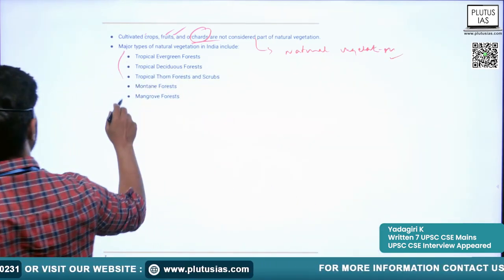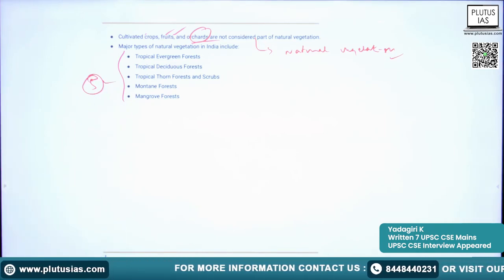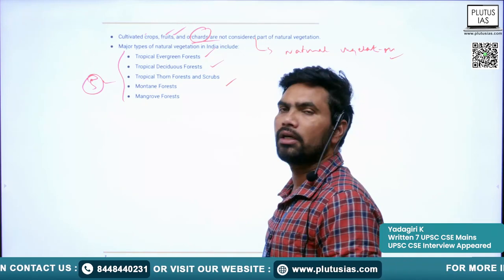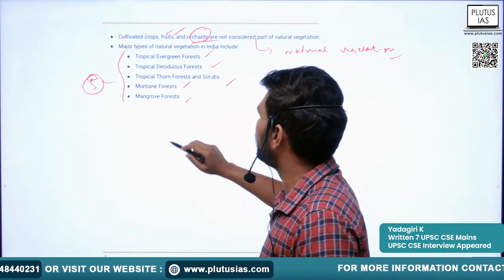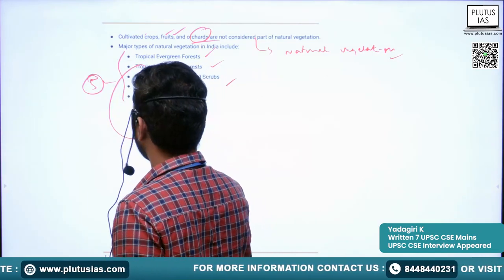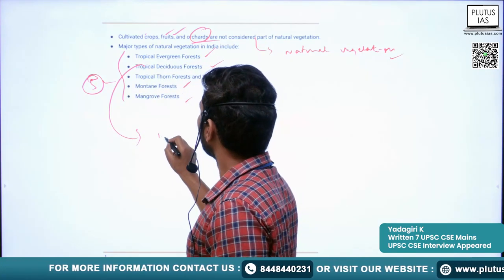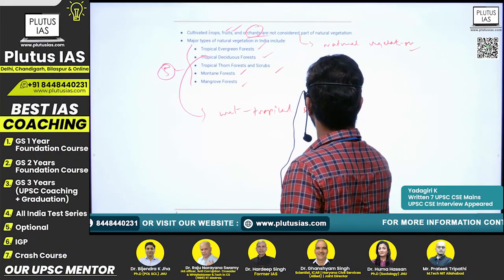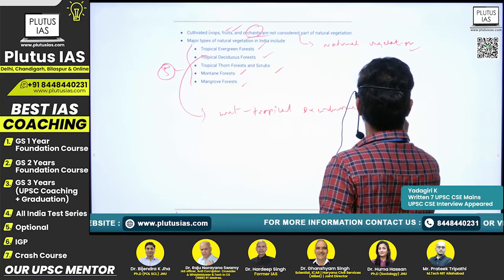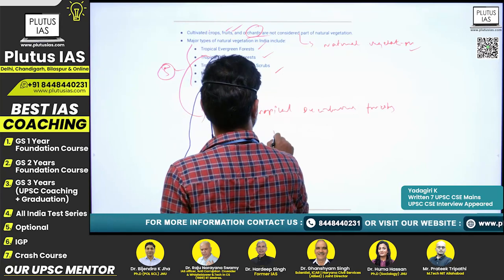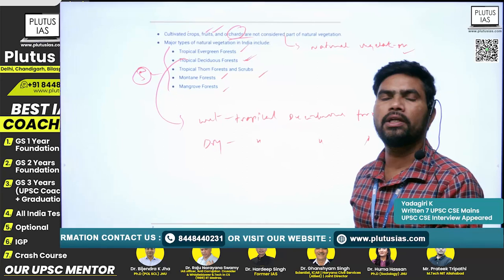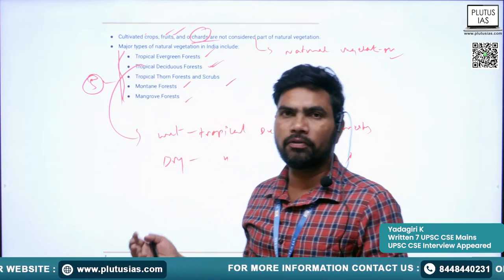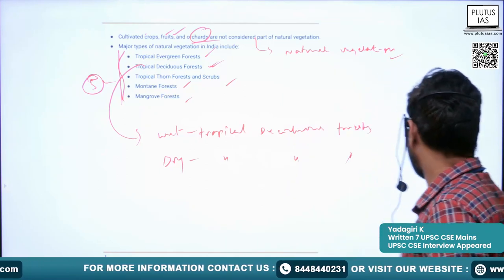In India, we can broadly divide natural vegetation into five categories: tropical evergreen forest, tropical deciduous forest, tropical thorn forest and scrubs, mountain forest, and mangrove forest. The tropical deciduous forest can be further divided into two subcategories: wet tropical deciduous forest and dry tropical deciduous forest.